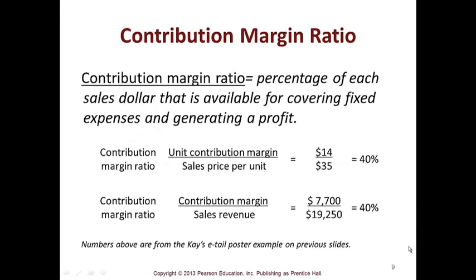The contribution margin ratio is the percentage of each sales dollar that is available for covering fixed expenses and generating a profit. It's your unit contribution margin divided by your sales price per unit. So that $14.00 divided by the sales price means your contribution is 40%. You can also get it by dividing total contribution margin by total sales revenue, and it's still 40%. This proves that these calculations work based on the assumptions provided.